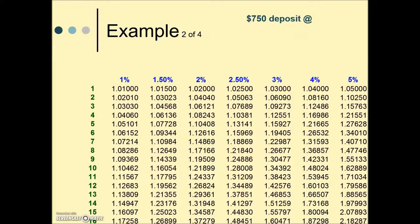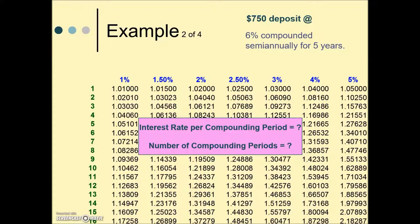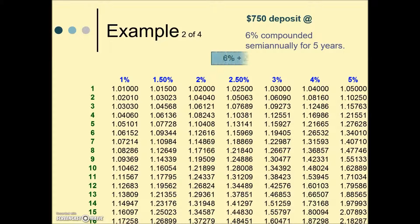What if we had $750 deposited at 6% compounded semi-annually for five years? To use the table, we need to find our interest rate per period, i, and n, the number of compounding periods. i will be 6% divided by the compounding number associated with the frequency. Semi-annually means twice a year, so 6% divided by 2 is 3%.